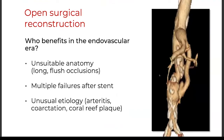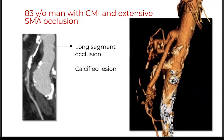There are some patients that need open revascularization. This is a patient referred to me for a stent that I elected to do open: a very long lesion, supercalcified, full of thrombus. I did a supraceliac SMA and celiac bypass.